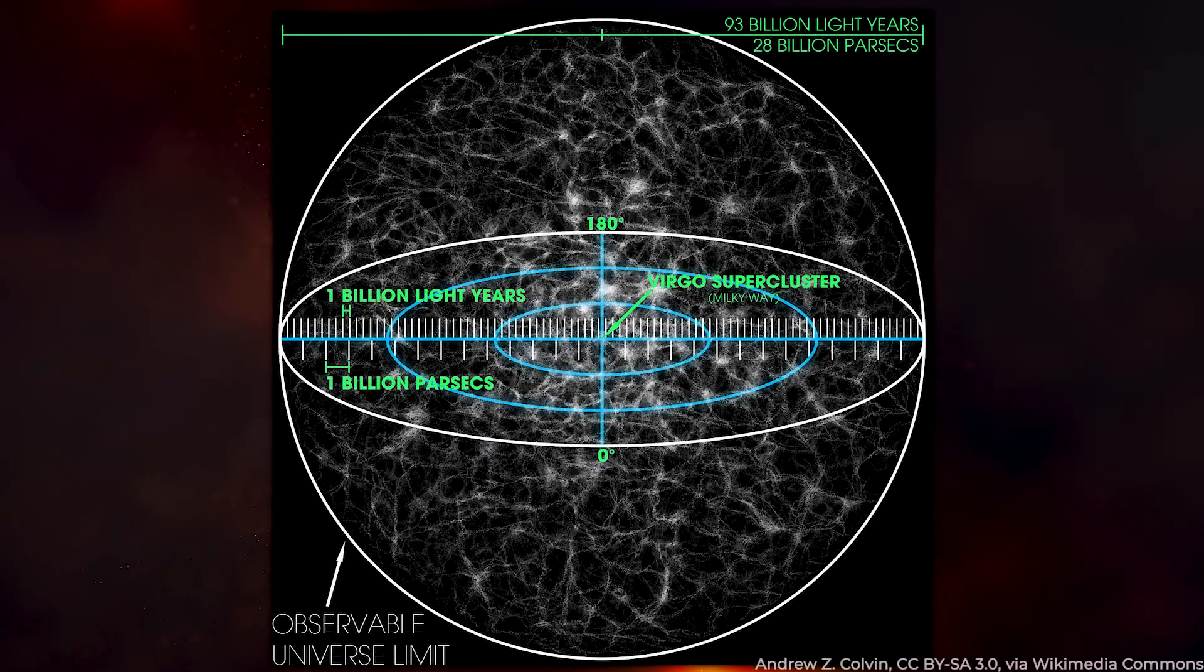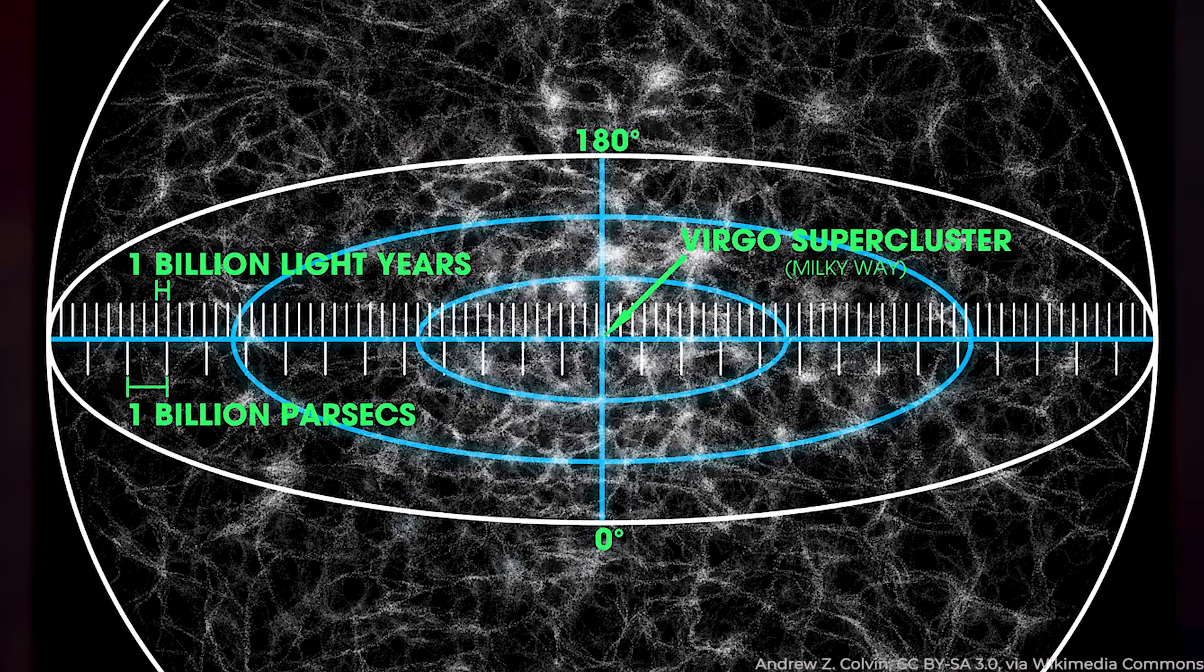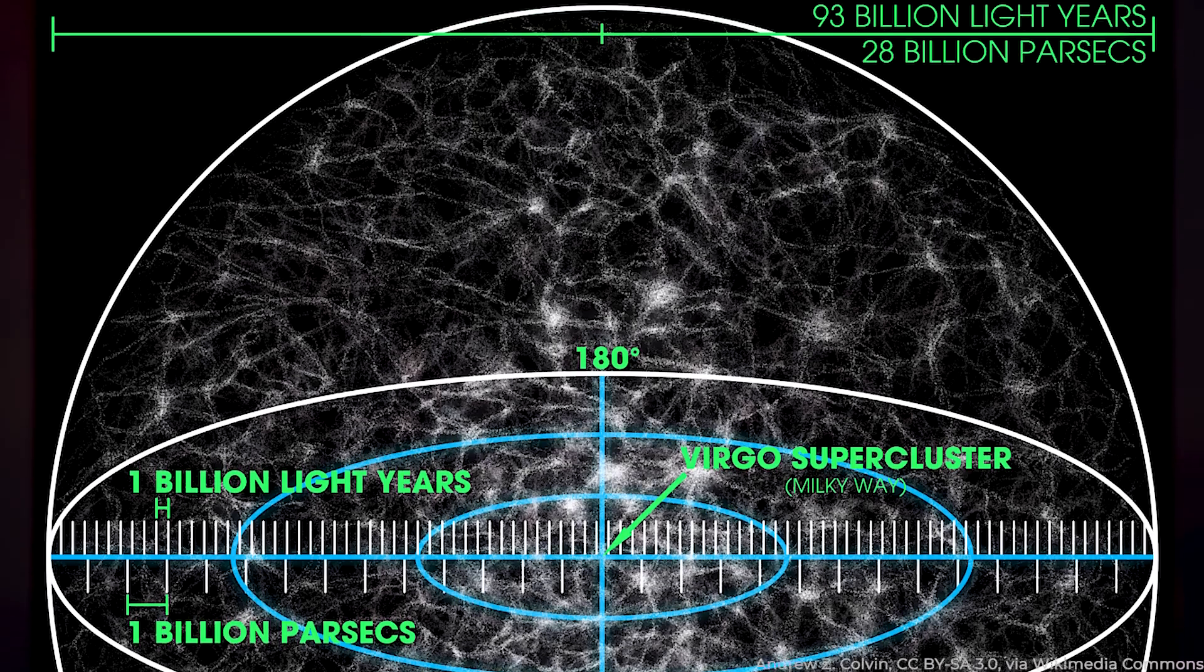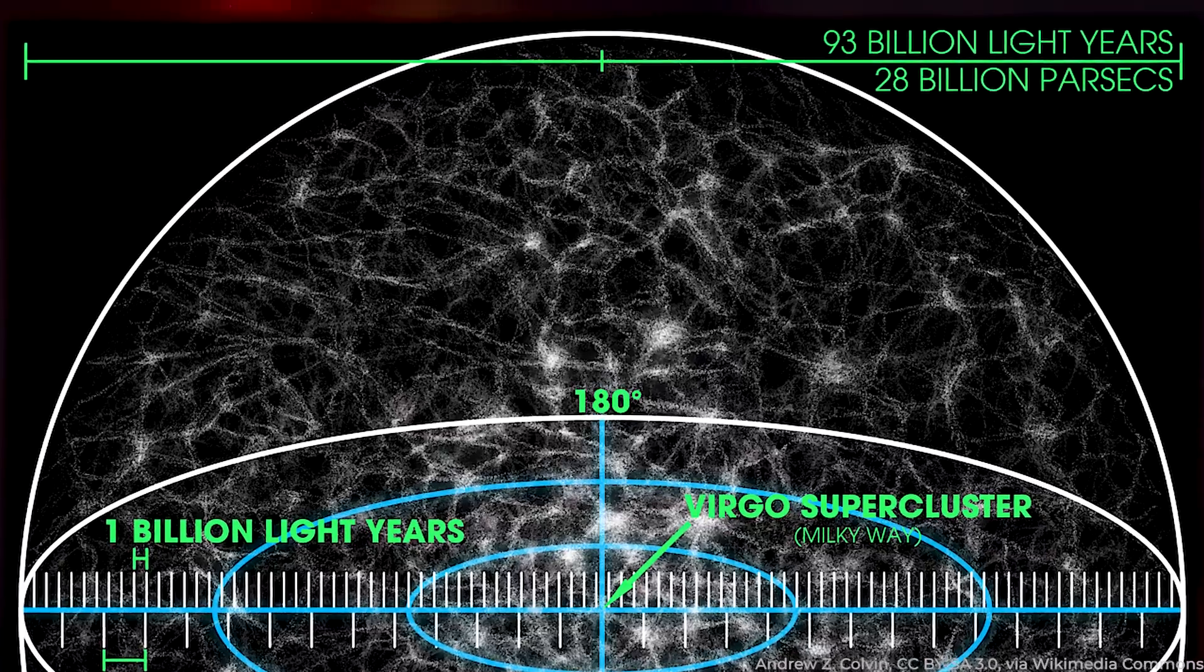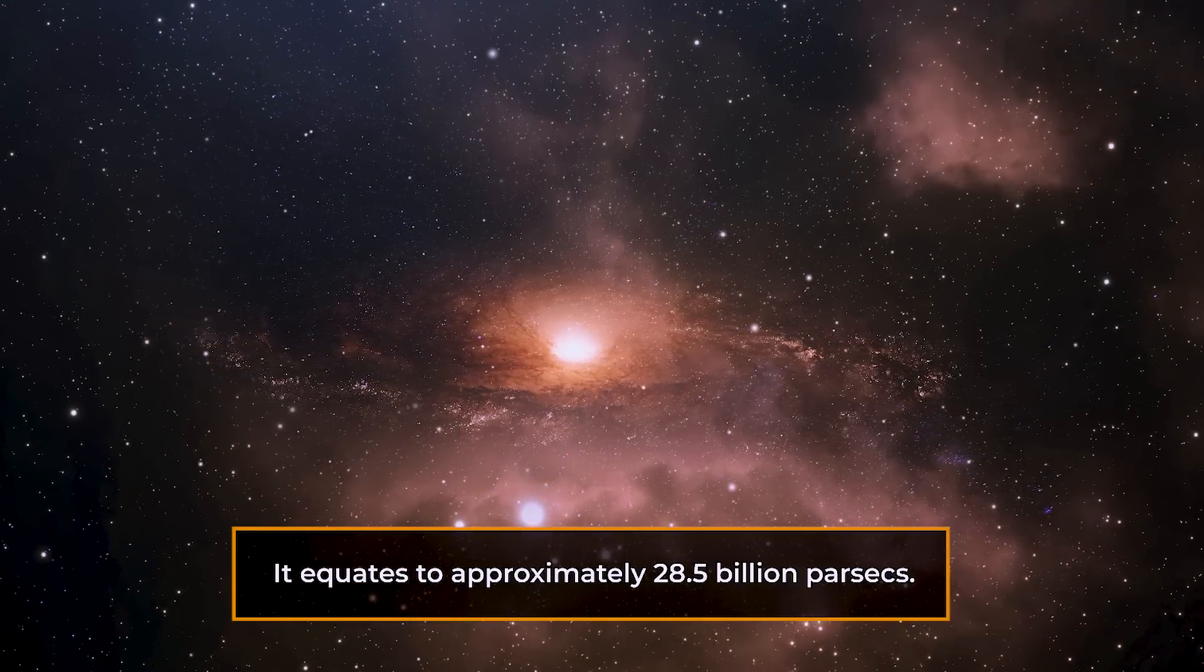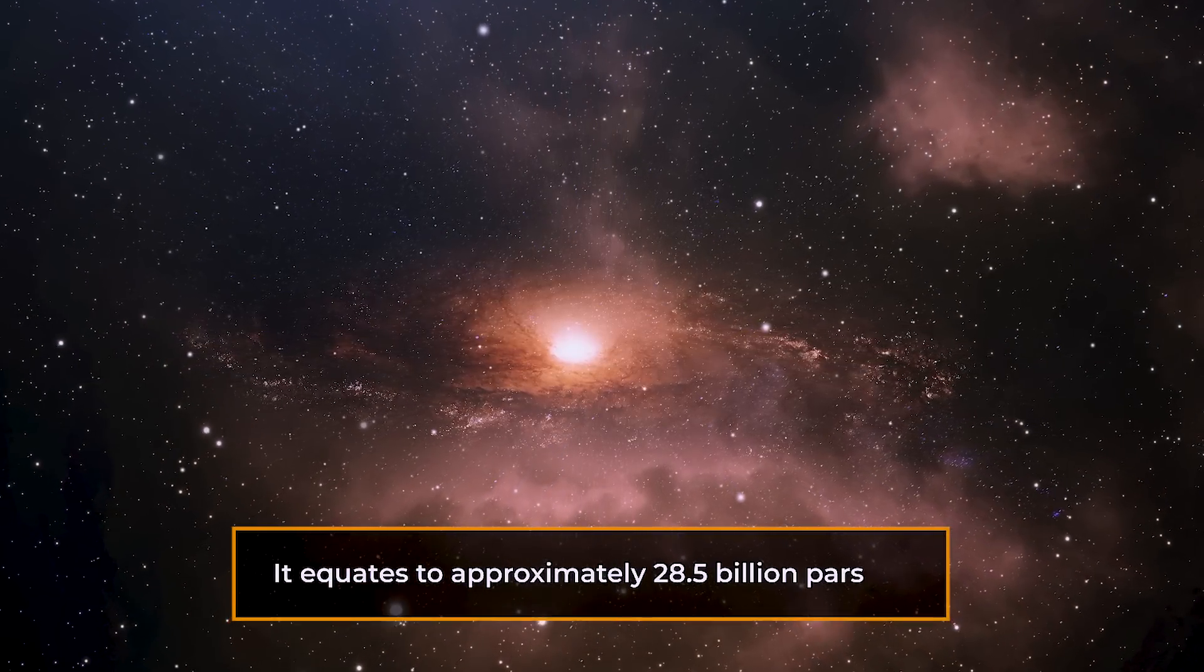And it's about 46 billion light years away. If you think of this as a sphere, then the diameter, the longest straight line you can draw from one edge to the other, passing through the center, would be double that distance, around 93 billion light years. That's an almost unimaginable distance. But if you're into numbers, it equates to approximately 28.5 billion parsecs.